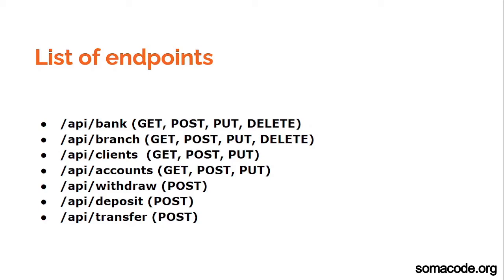Here is a list of endpoints we are going to make. We will have the bank endpoint with GET, POST, PUT, and DELETE methods. We will also have API branch with GET, POST, PUT, and DELETE. Then we will have API clients with GET, POST, and PUT. We will also add DELETE for clients — though in a banking context, you don't delete a client, you deactivate them, so that will mostly use the PUT method to update a client as deactivated.